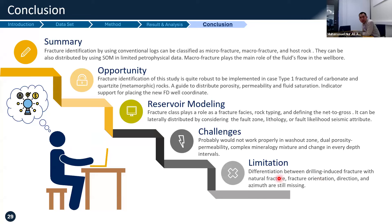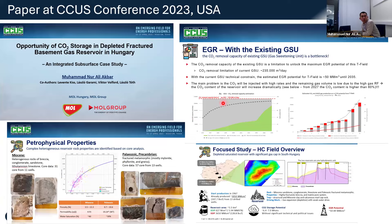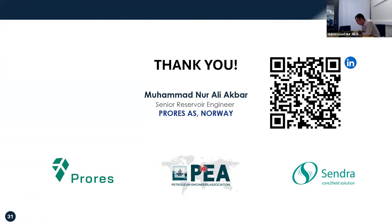To summarize: using conventional logs we can classify macro fractures, micro fractures, and host rock distributions. By using self-organizing maps we can implement limited petrophysical information to get valuable fracture modeling results. There are some limitations — differentiation between drilling-induced and natural fractures, and fracture orientation, direction and azimuth are still missing with this method — but if you have image log data it can really help support the model. A fractured basement is also a really good candidate for CCS, as presented in a previous conference paper.